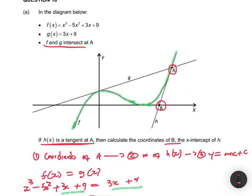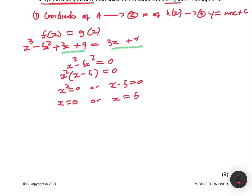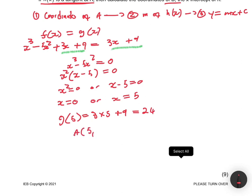This gives x = 0 or x = 5. Since point A is not near the origin, x = 5 at A, and x = 0 is the other intersection point. Now to find the y-value of A, we substitute x = 5 into g(x) (the simpler equation): g(5) = 3(5) + 9 = 15 + 9 = 24. So the coordinates of A are (5, 24).